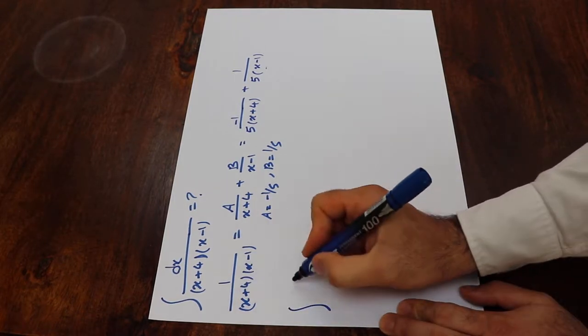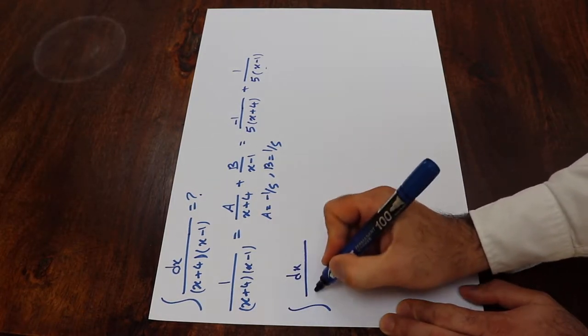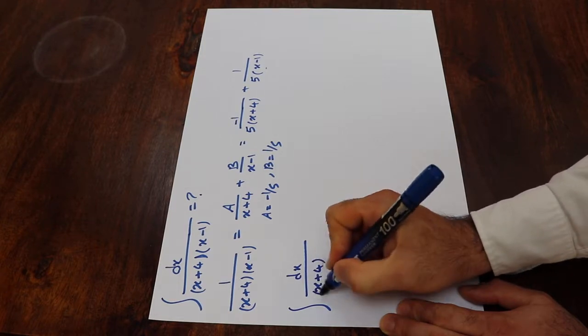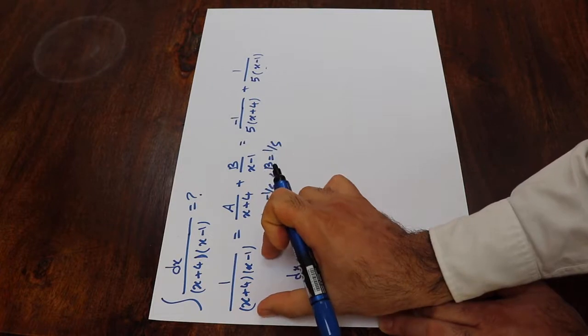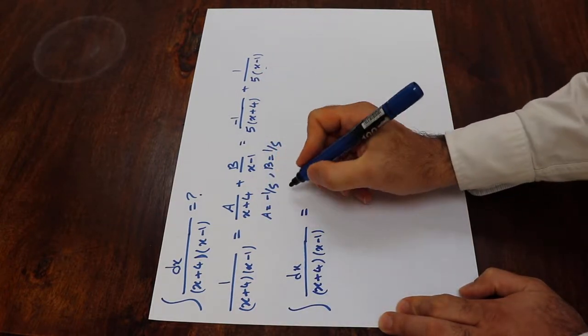Therefore here, you can write that the integral of dx x plus 4 times x minus 1 will be equal to the integral of this term.